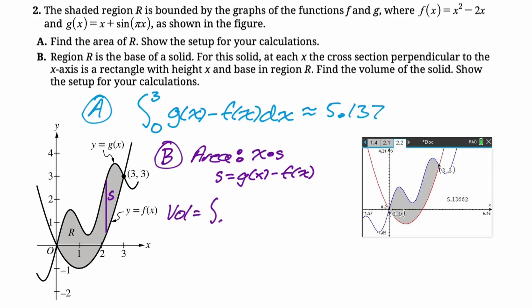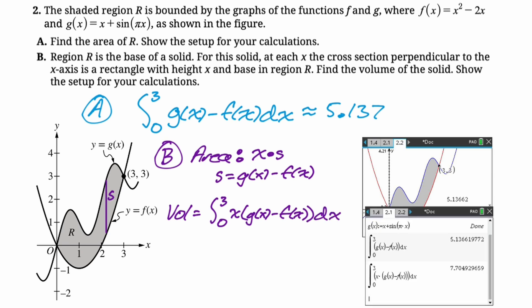So the volume is going to be equal to the integral from 0 to 3, x times the quantity [g(x) - f(x)] dx. And then this is calculator, so on the calculator I punched it in and I got approximately 7.705. That's the entire thing.